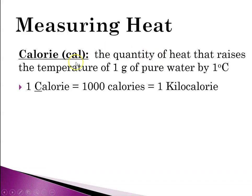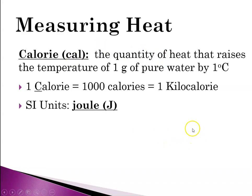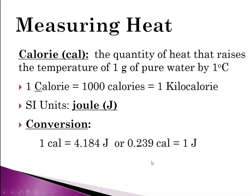One food Calorie (capital C) is a kilocalorie — one thousand lowercase calories. We'll be concerning ourselves with plain old lowercase c calories. One calorie raises one gram of water one degree C. The SI units, however, do not use calories; they use the joule. Converting back and forth: one calorie equals 4.184 joules, or one joule equals 0.239 calories.